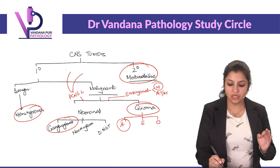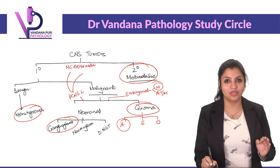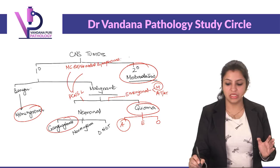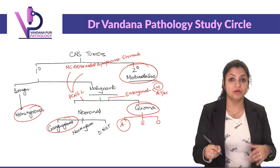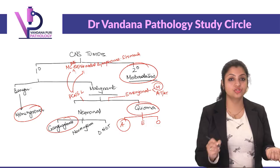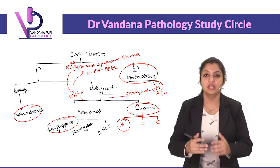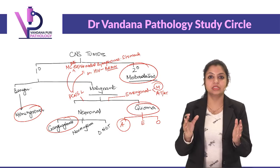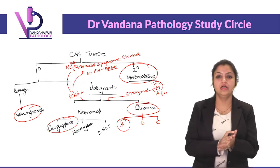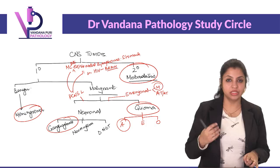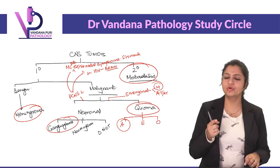Regarding CNS lymphoma: the most common site of extranodal lymphoma normally is the stomach. However, in HIV patients, the most common site of extranodal lymphoma is the brain. Primary CNS lymphoma usually occurs in HIV-positive patients — it is the most common site of extranodal non-Hodgkin lymphoma in HIV. The most common overall brain tumor remains metastasis.